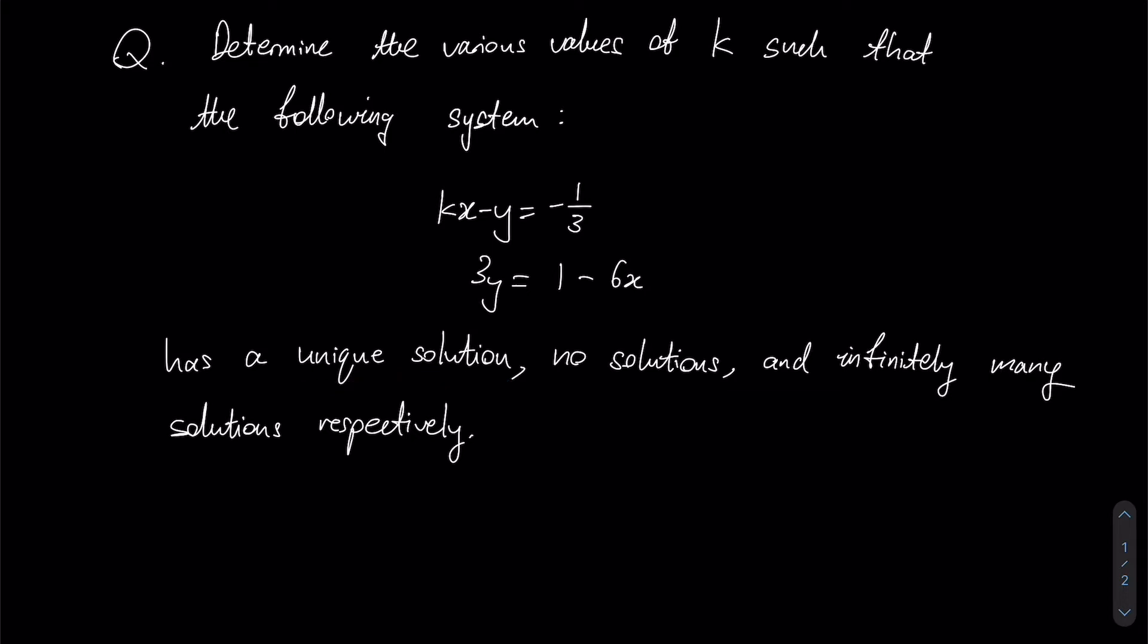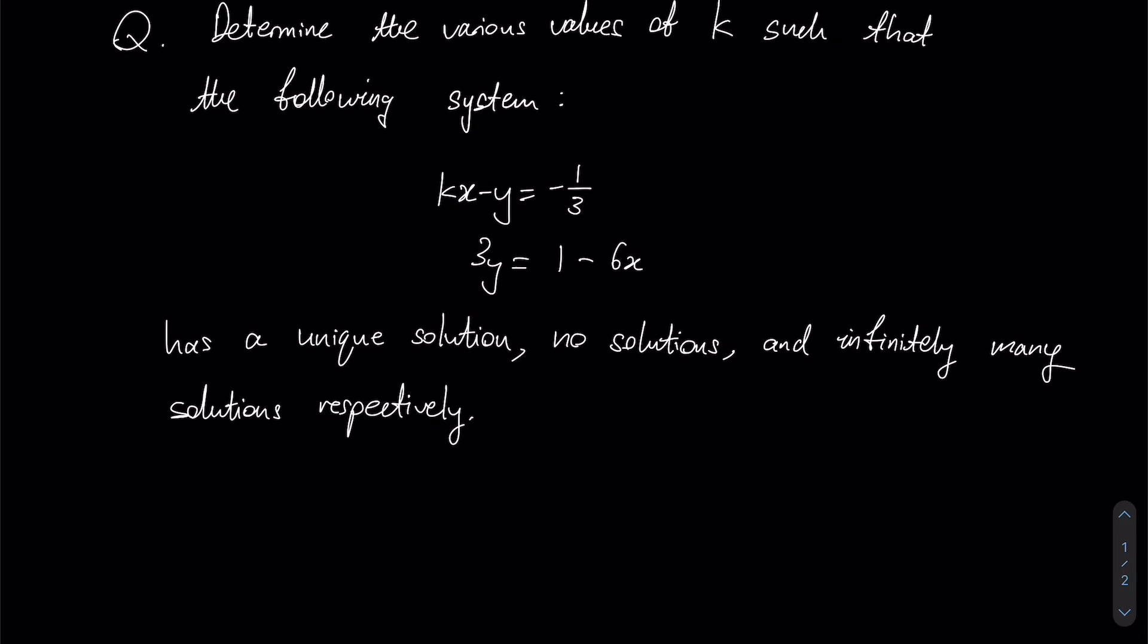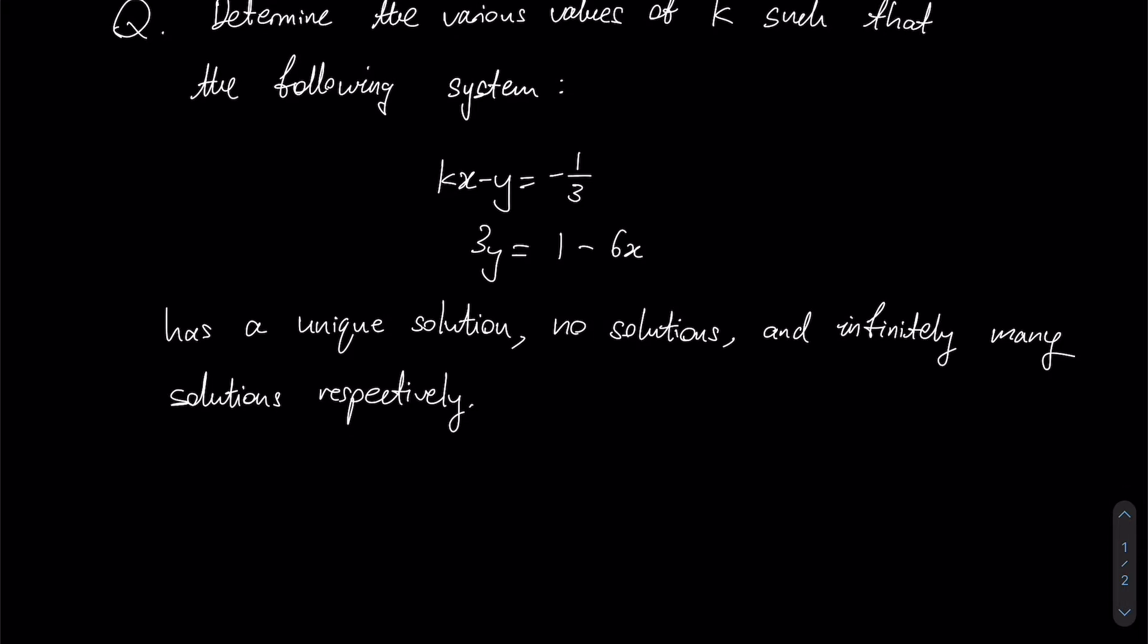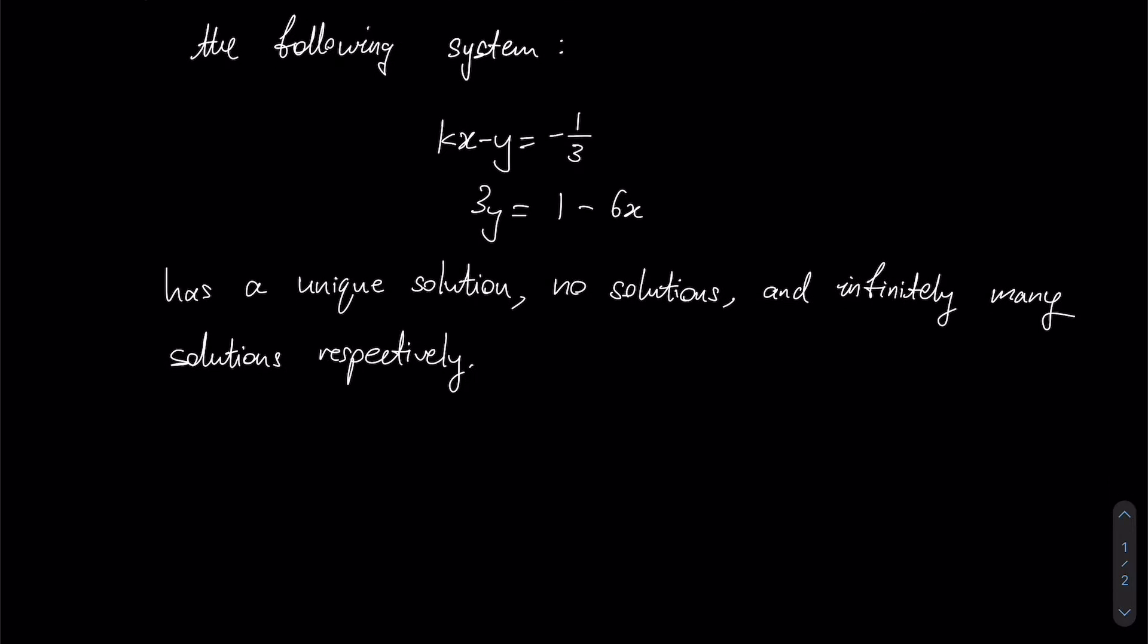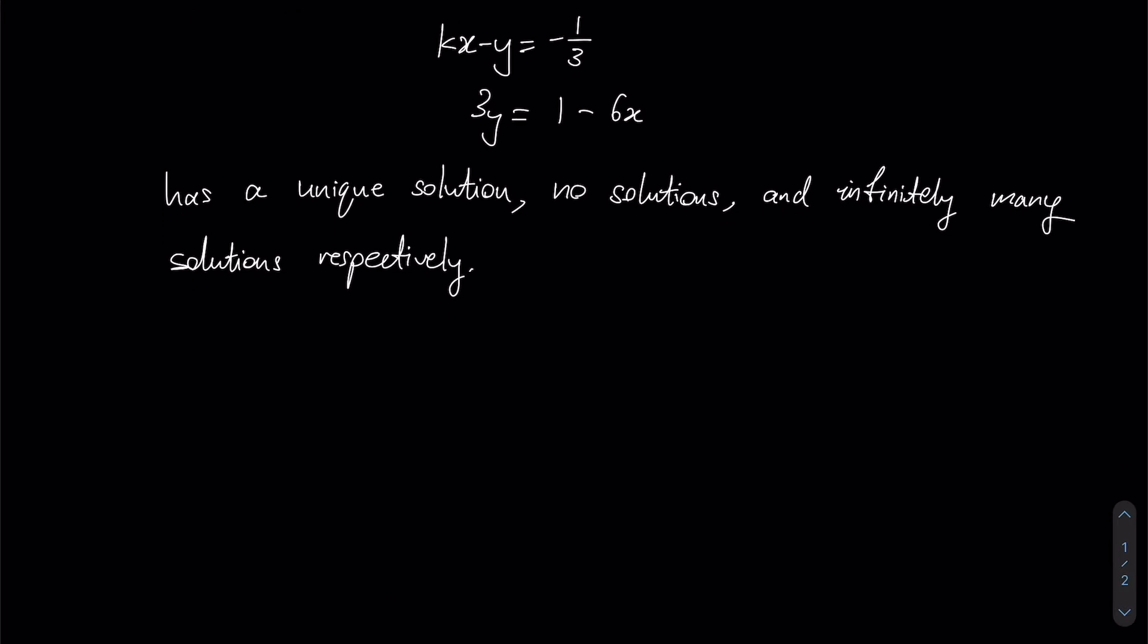Let's take a look. The question presents us with a problem and gives us two different equations in x, y as well as a constant parameter k. We are asked to determine the various values or ranges of k such that we can obtain three such cases: unique solution, no solutions, and infinitely many solutions for the values of x and y.